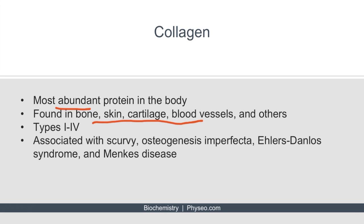There are four types of collagen, types 1 through 4. However, this is usually not emphasized on Step 1. It's much more important and high-yield to focus on the disorders associated with collagen. These include scurvy, osteogenesis imperfecta, Ehlers-Danlos syndrome, and Menkes disease.